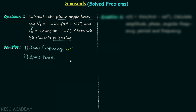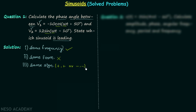Moving on to the second condition: they should have the same form. V1 is a cosine function and V2 is a sine function, so they don't have the same form. The third condition is that the amplitudes of the two sinusoids must have the same sign — either both positive or both negative. In our case, V1 has a negative sign but V2 has a positive sign, so the third condition is also not satisfied.